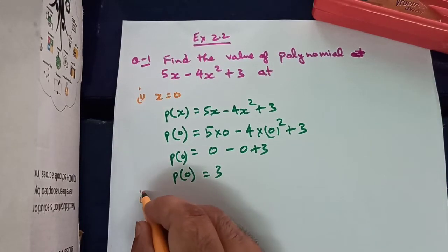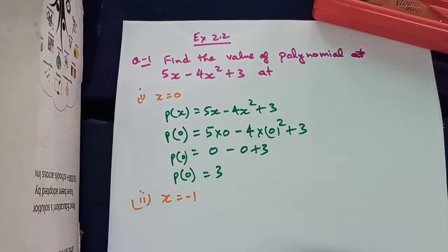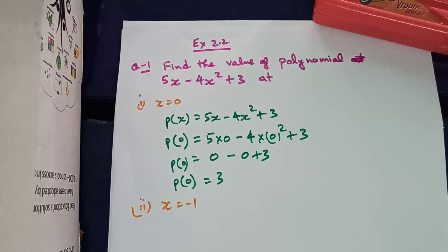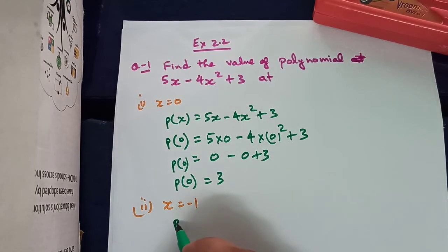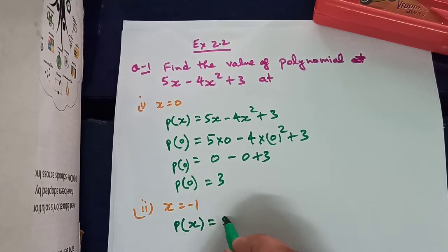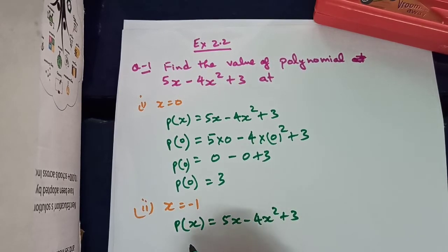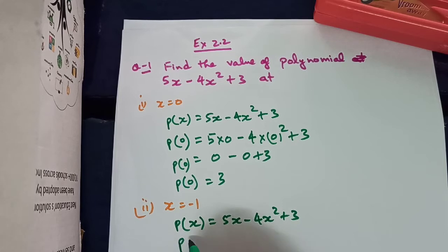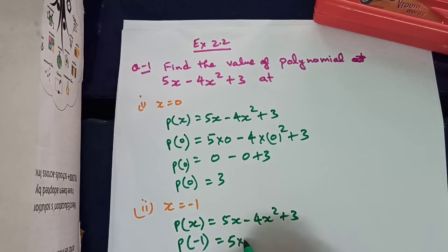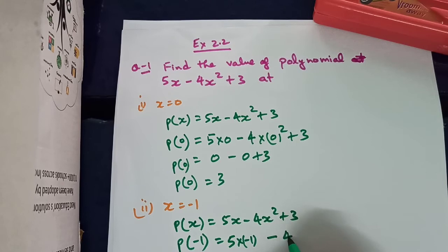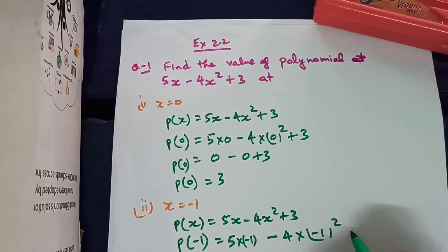Similarly, in the second part we have to substitute x equals minus 1. We start again with the polynomial p(x) given as 5x minus 4x squared plus 3. Since we have to find the value of the polynomial at x equals minus 1, we write it as p(minus 1). So p(minus 1) will be 5 times of minus 1.